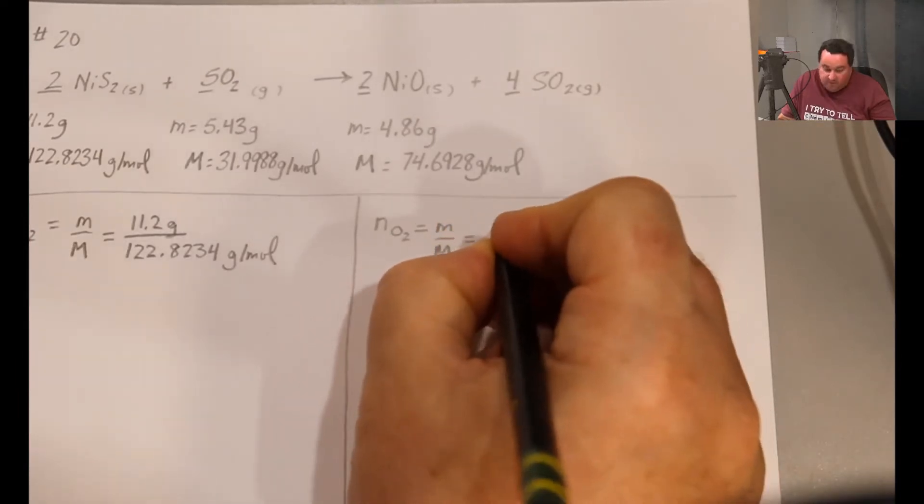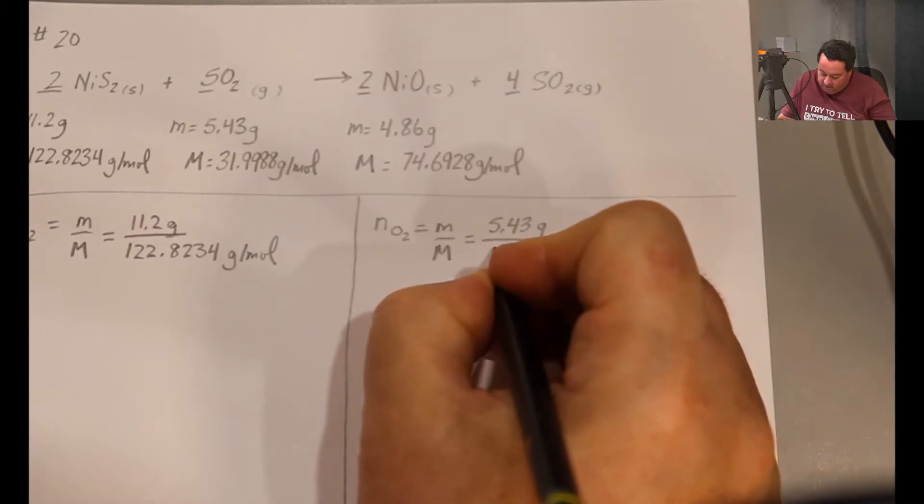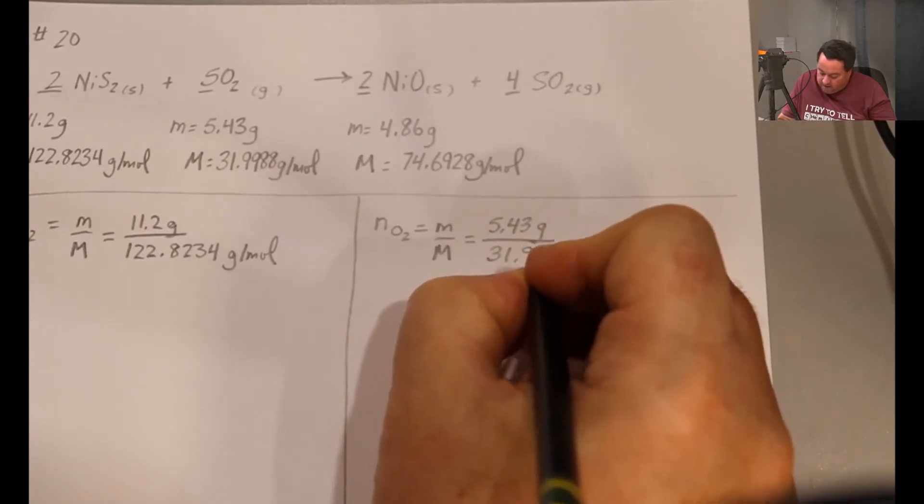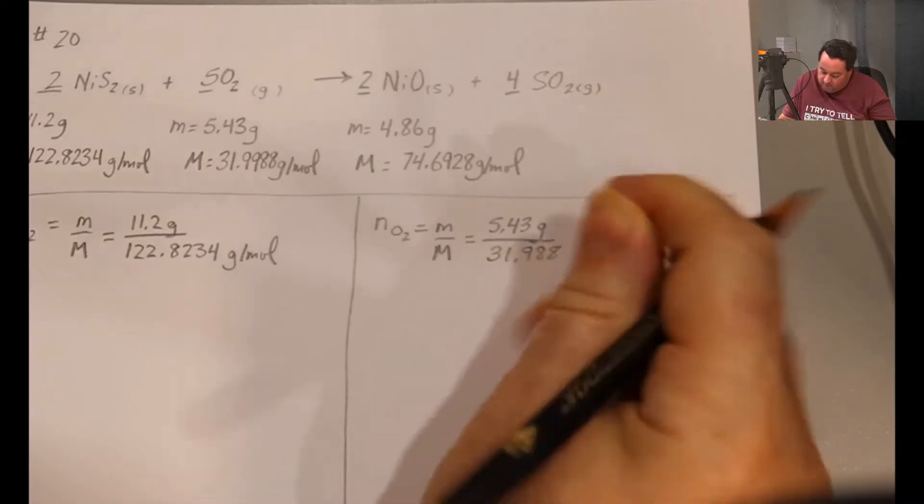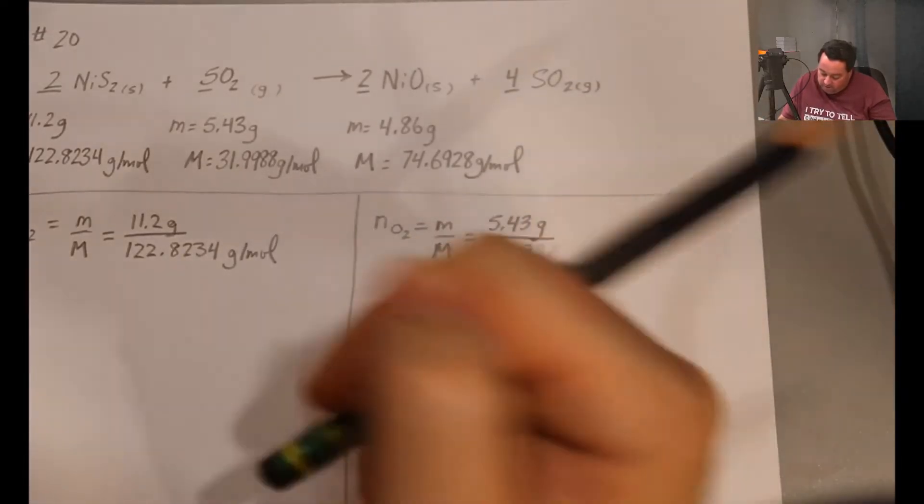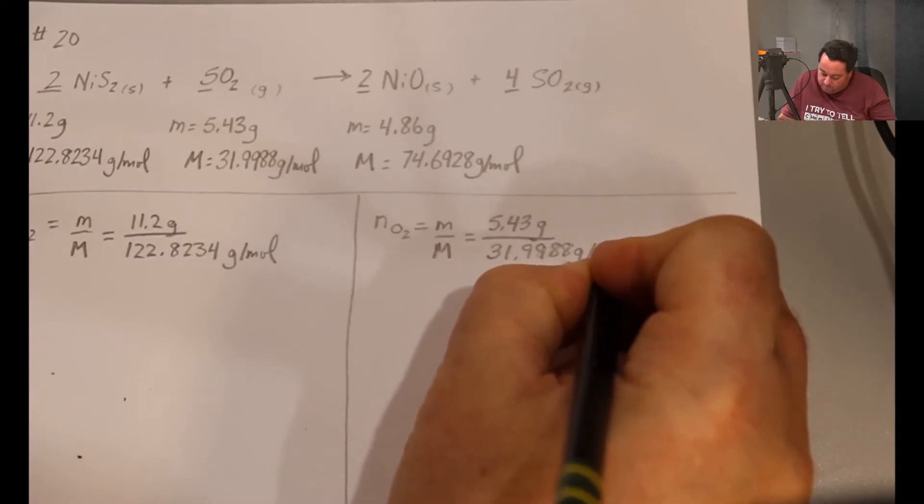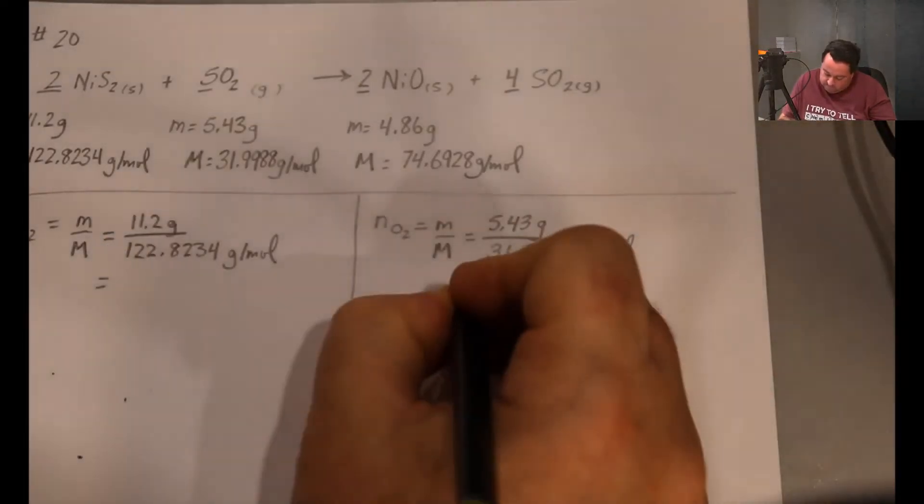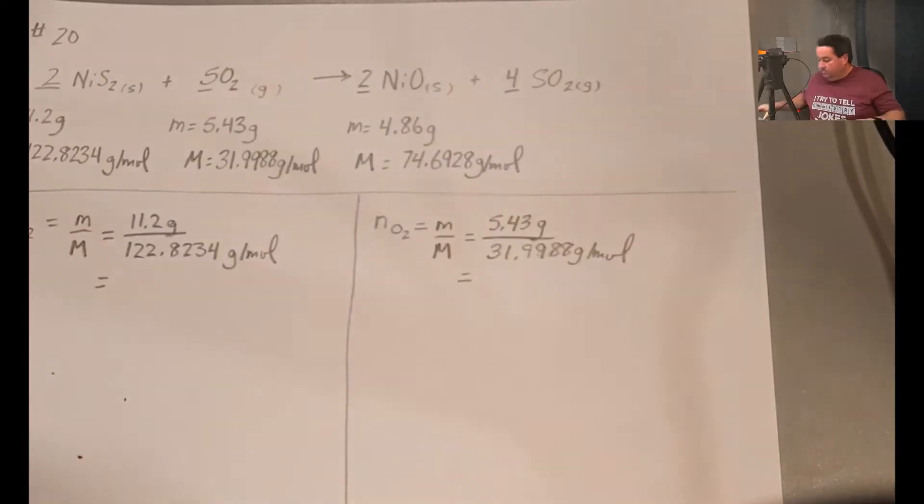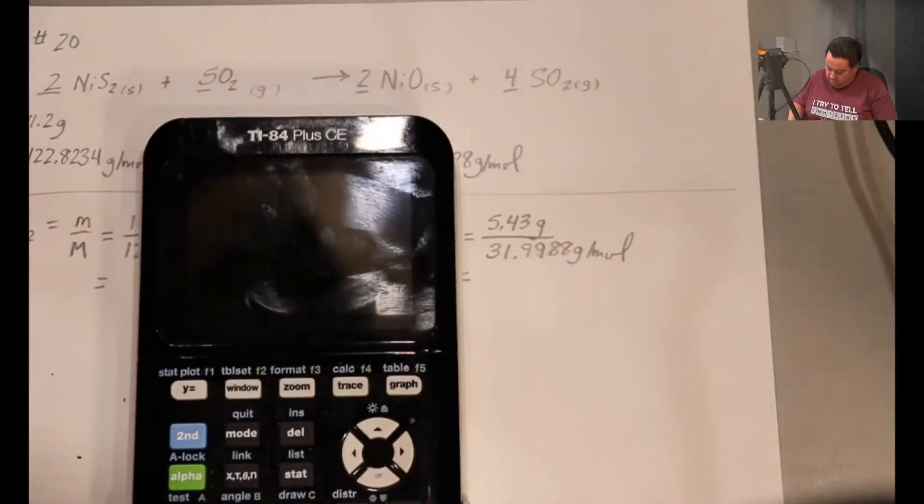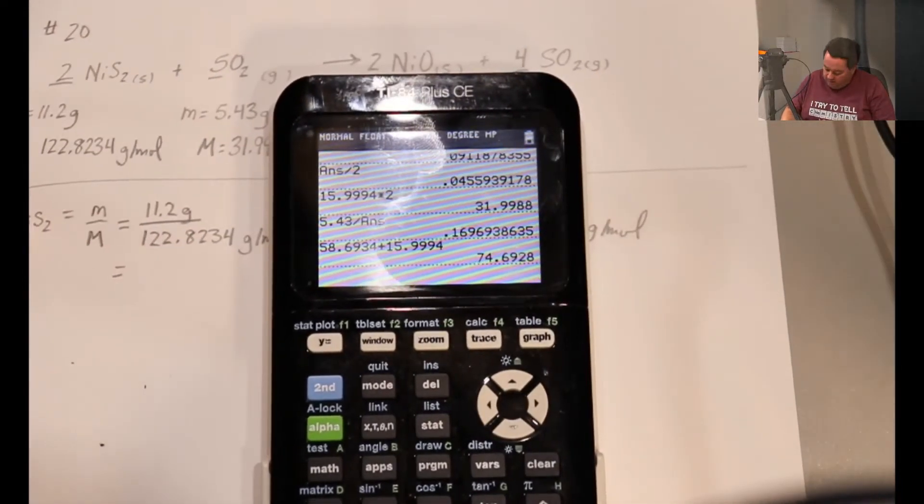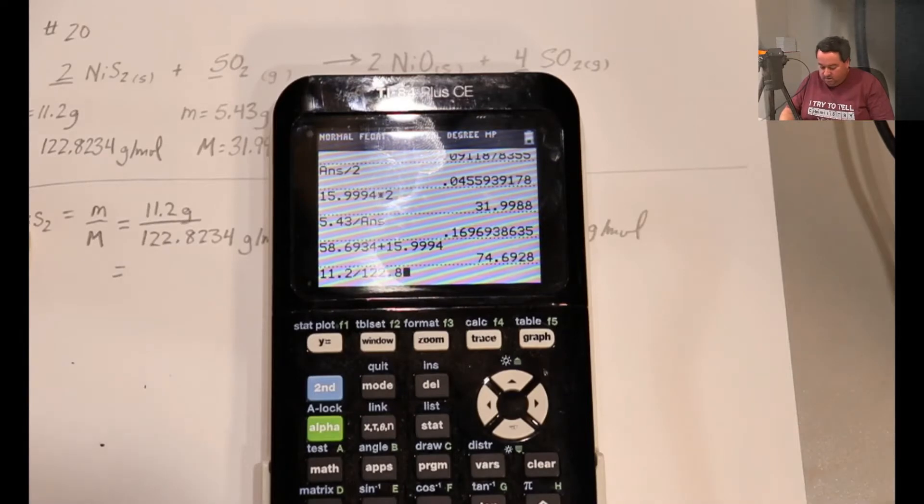And for this material it's 5.43 grams divided by 31.9988 grams per mole. Important to check as you're doing this. So we have 11.2 divided by 122.8234.